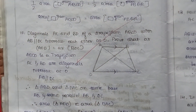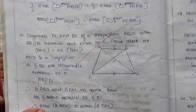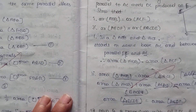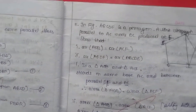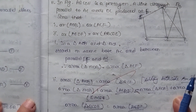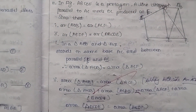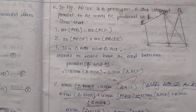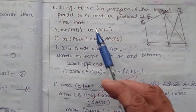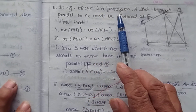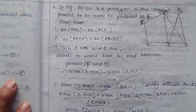Next I am going to explain question number 11. According to the given figure, there are two sub-questions. In the given figure, ABCDE is a pentagon.